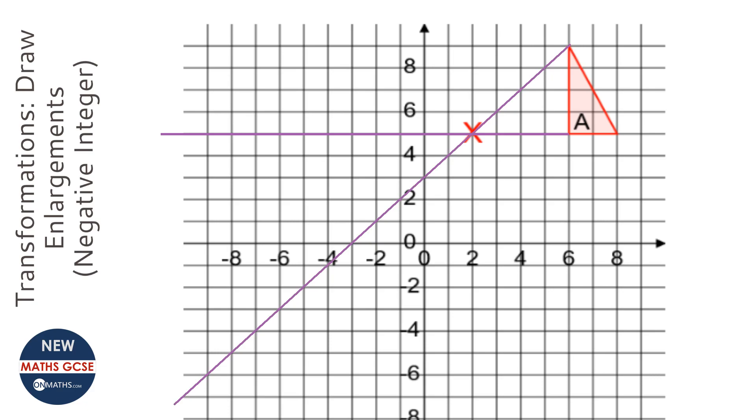OK, now the next thing to do is count how many squares we went away. So I am going to start with the bottom left point. So we have 1, 2, 3, 4 to get to the centre enlargement. So if it is minus 2 we are going to go another 4 twice. So 1, 2, 3, 4. 1, 2, 3, 4. So we end up here.